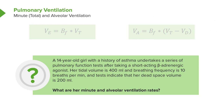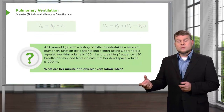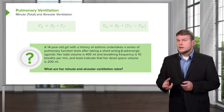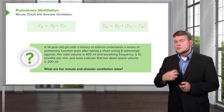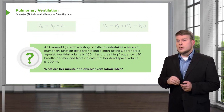If you wanted to calculate her alveolar ventilation, we have to account for dead space. You take her tidal volume, 400, minus the dead space volume, which is 200, yielding 200, then multiply that by 10 — her breathing frequency — to get 2000 milliliters per minute. Alveolar ventilation will always be less than minute ventilation, but it tells you the amount of gas that actually reaches the point where gas exchange can occur.